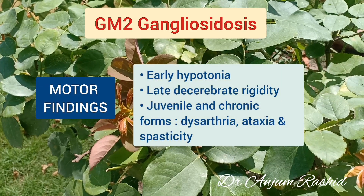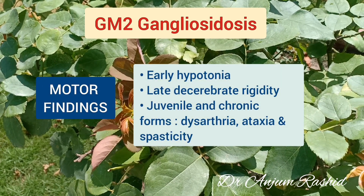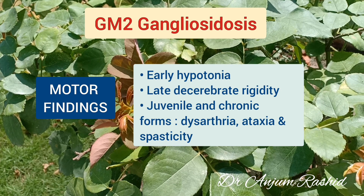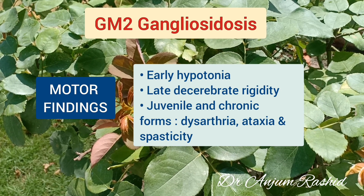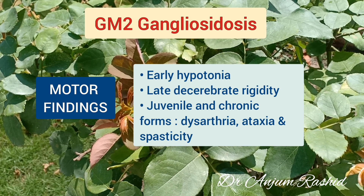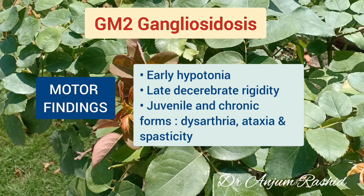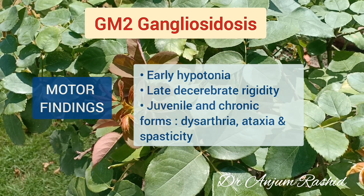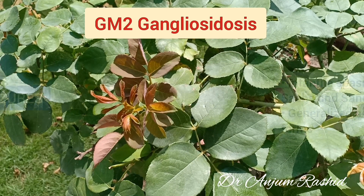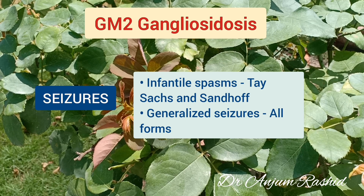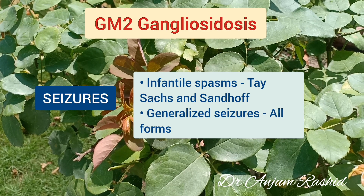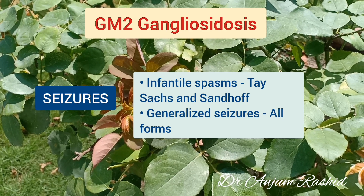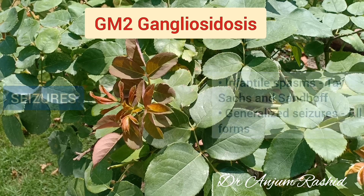Regarding motor findings: there is early hypotonia but late decerebrate rigidity. In juvenile and chronic forms, there may be dysarthria, ataxia, and spasticity. Infantile spasms are common in Tay-Sachs and Sandhoff disease, while generalized seizures can occur in all forms.